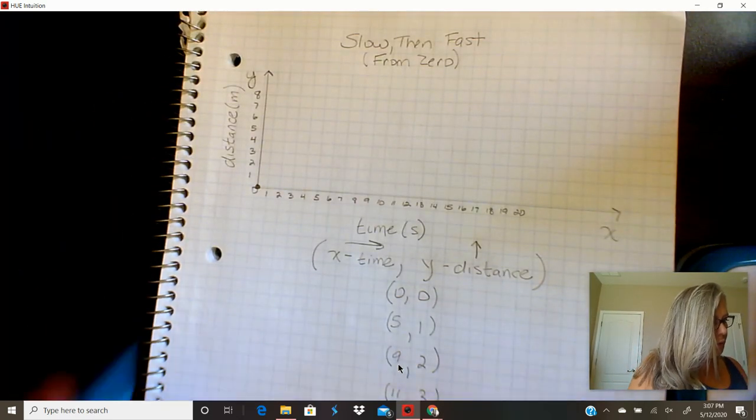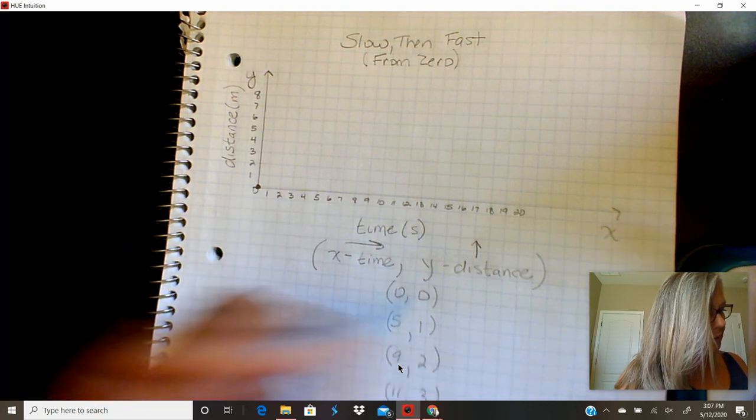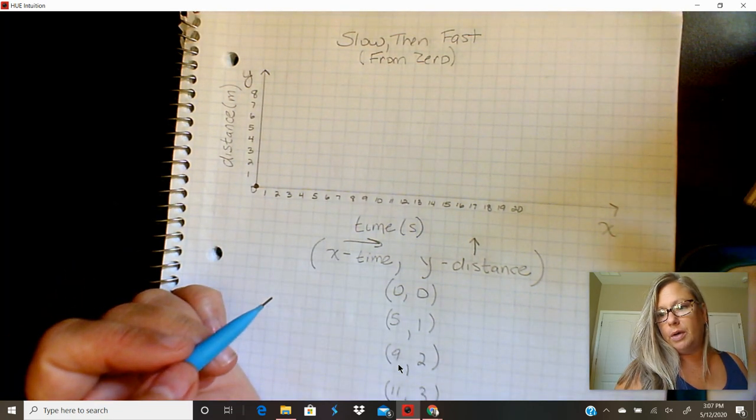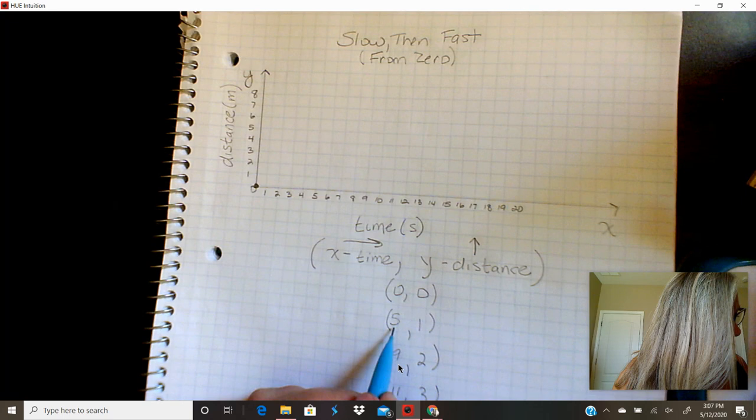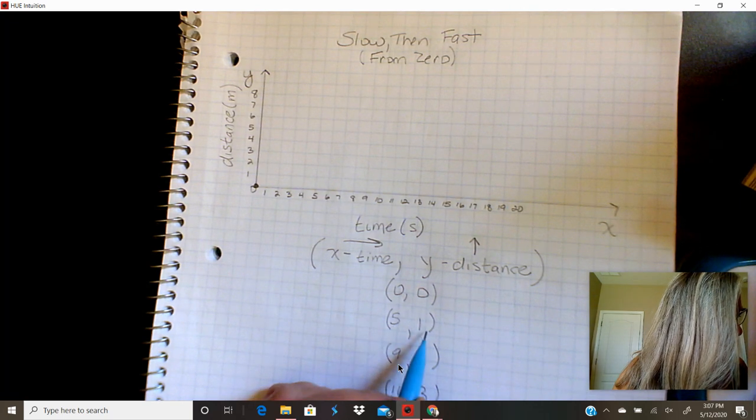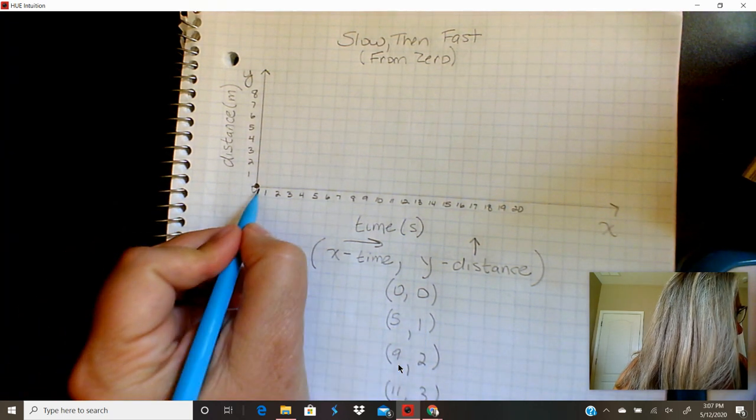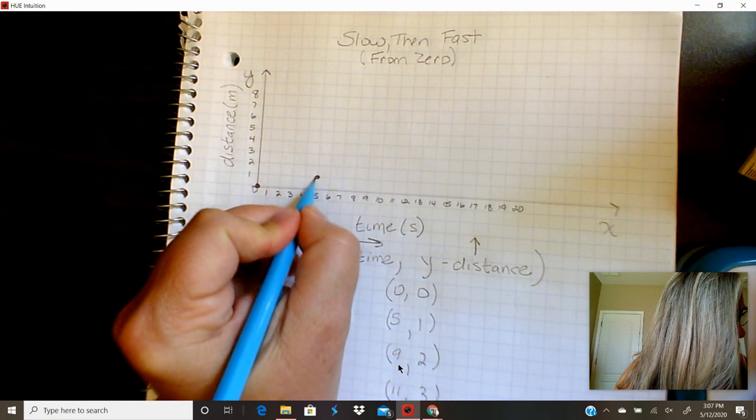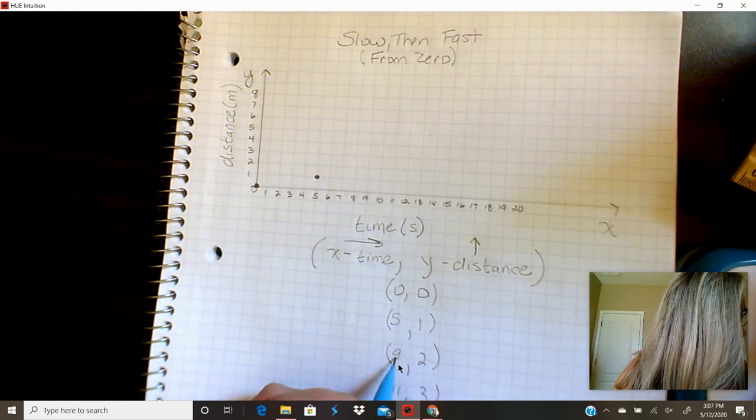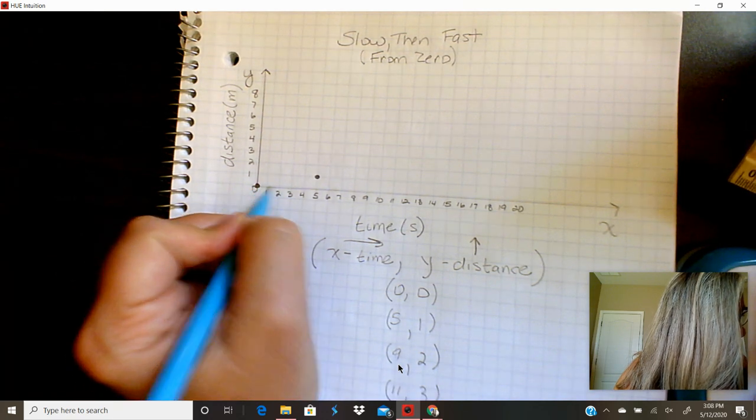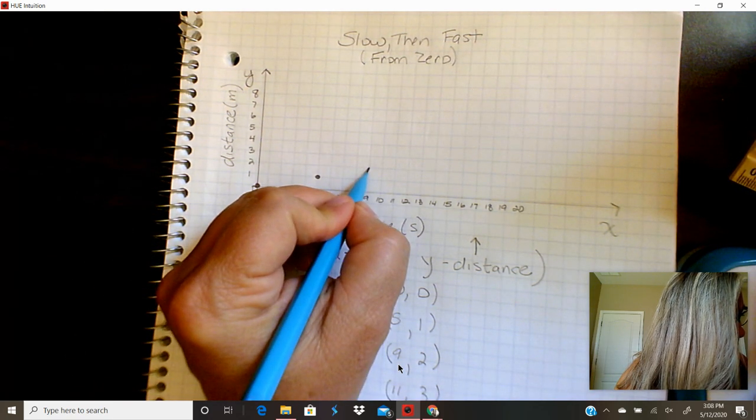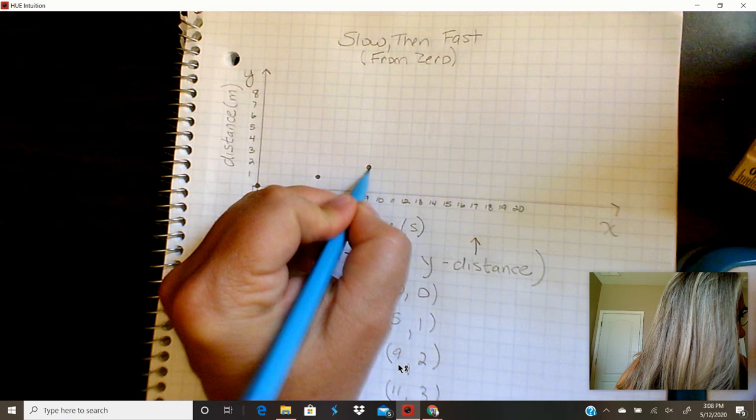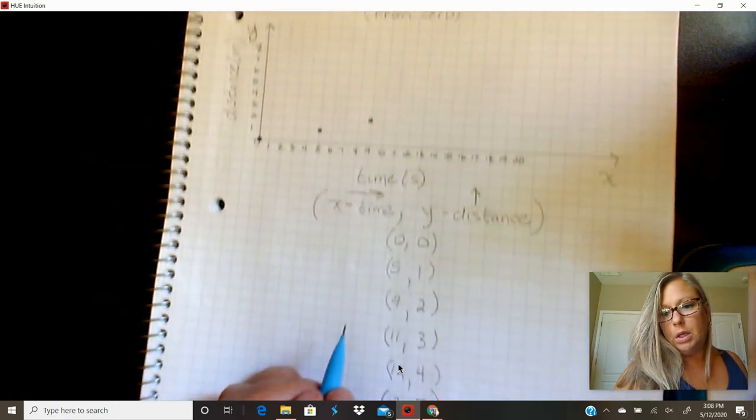Alright, the first point is zero distance and zero time and I already have that graph for you. Alright, now it's five time and one meter. Crawl over to the five, climb up one. The next coordinate is nine and two. Crawl over to the nine, climb up to the two.